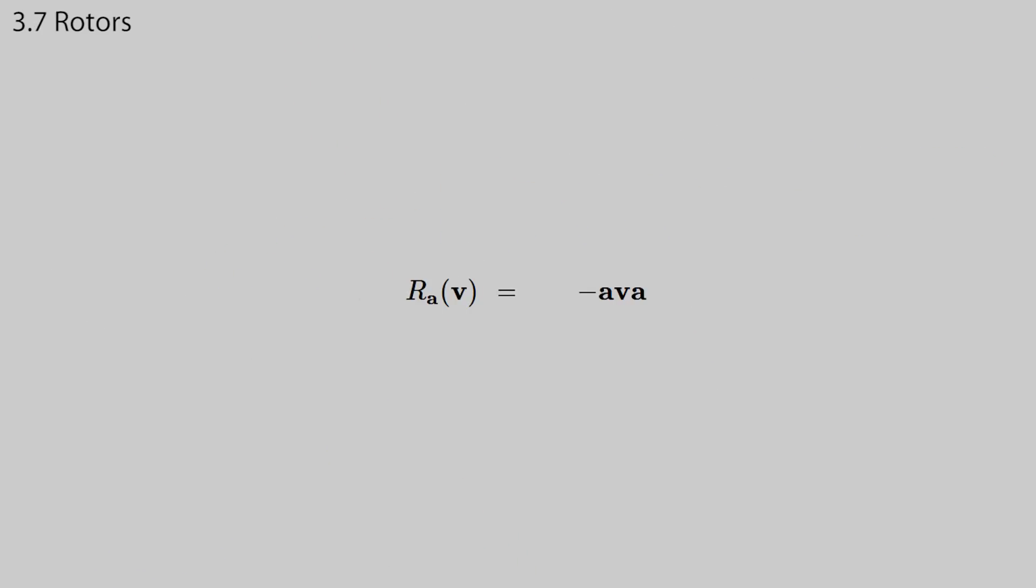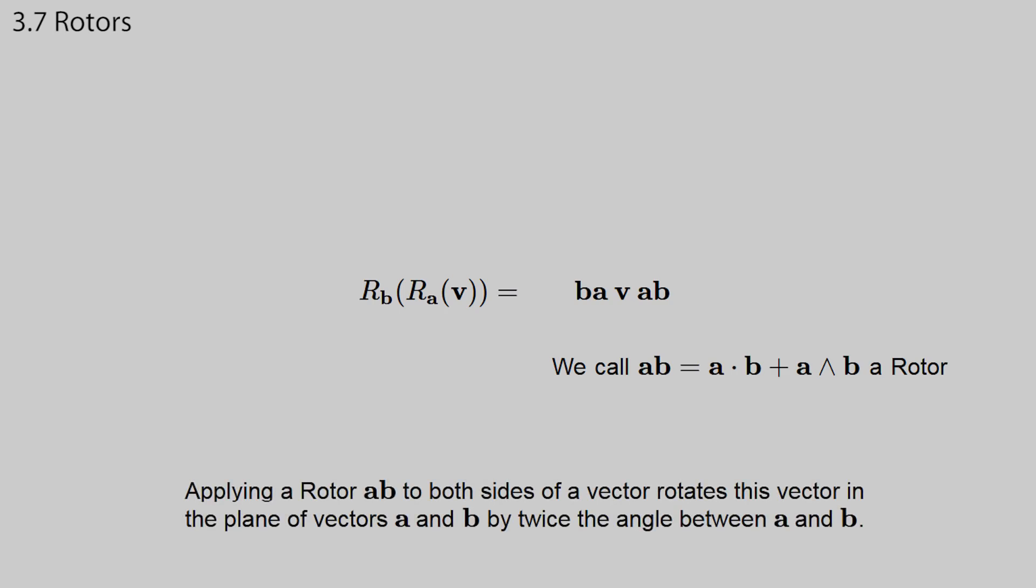In terms of the geometric product, the two reflections simply correspond to the following. We call ab a rotor because multiplying by ab on both sides of a vector performs a rotation. Applying a rotor ab to both sides of a vector rotates this vector in the plane of vectors a and b by twice the angle between a and b.